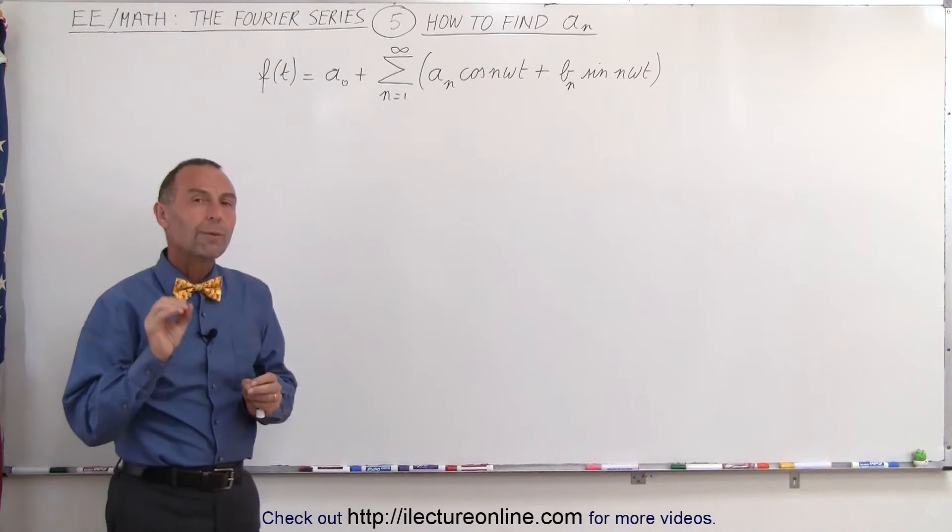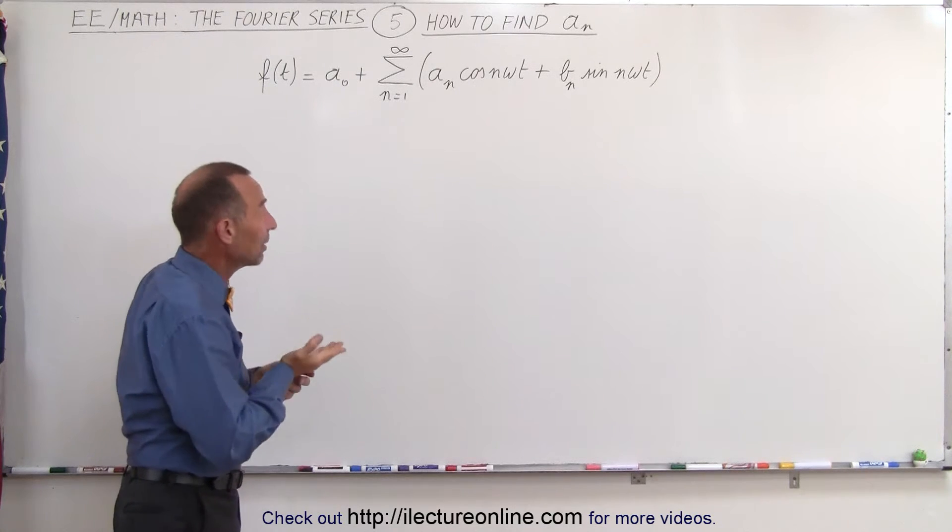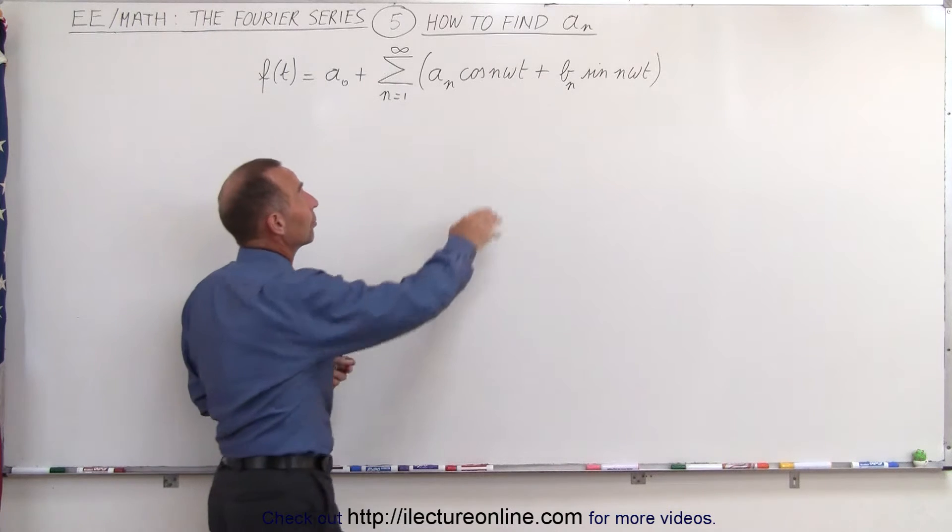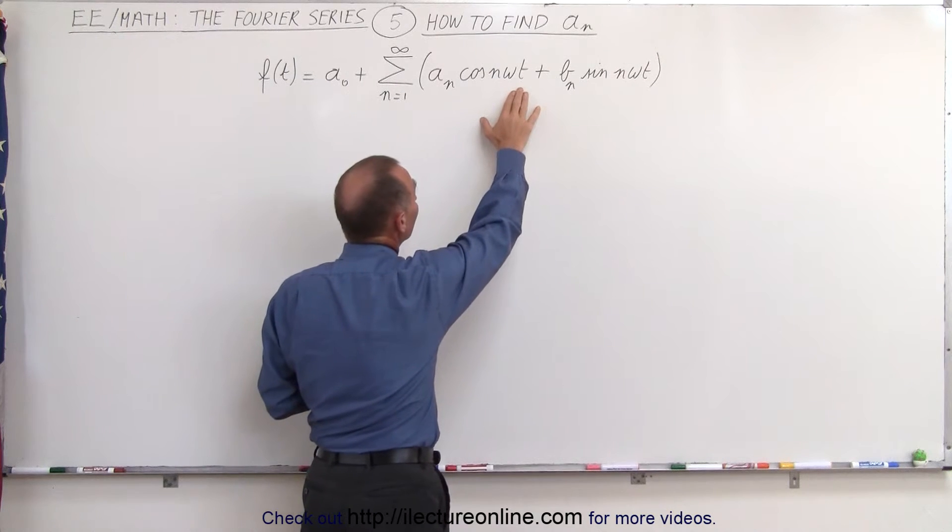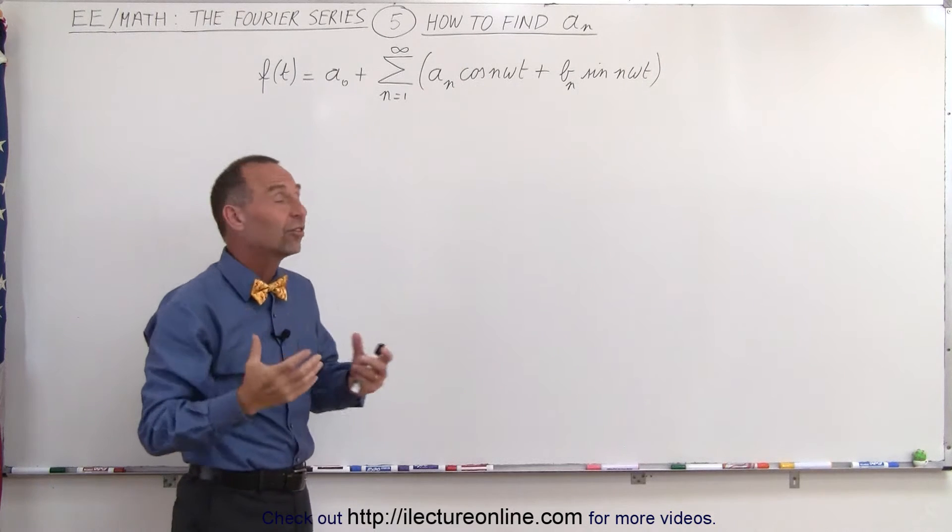To do that, we remember the rule that we learned in video 3. We know that if we integrate the sine of n omega t from 0 to t for one period, we get 0.